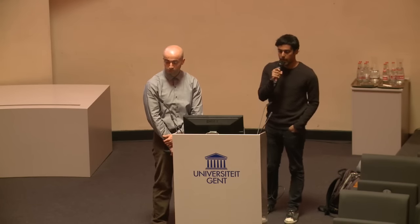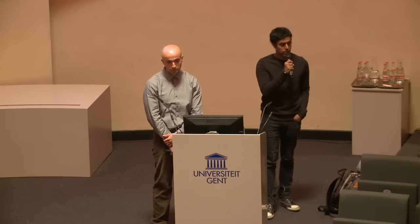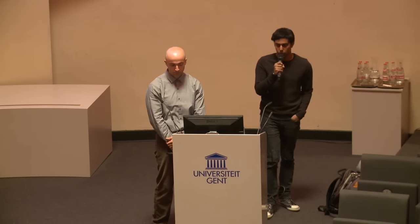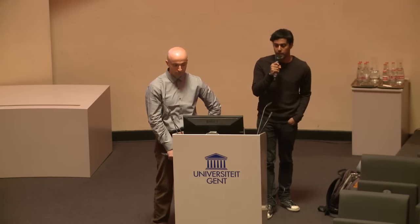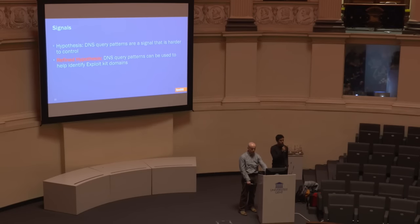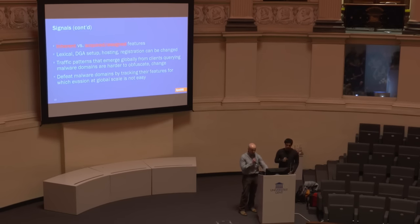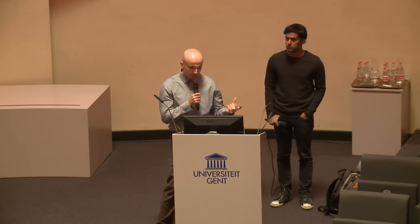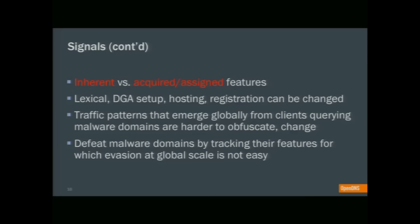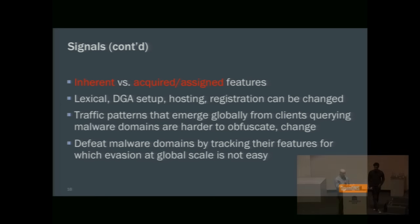We decided to look at techniques that don't rely on authoritative DNS — specifically DNS query patterns, which are harder for the attacker to control. We believe there's a very specific signal between exploit kit domains and their DNS query pattern from the client side. The idea is that the signals of these exploit kit domains have both inherent and acquired features. Attackers can change lexical makeup, DGA seeds, time granularity, hosting, IP prefix, ASN, and registration details to evade detection. However, certain patterns — like time elements or geographical features of clients looking up malicious domains — they cannot control or obfuscate.